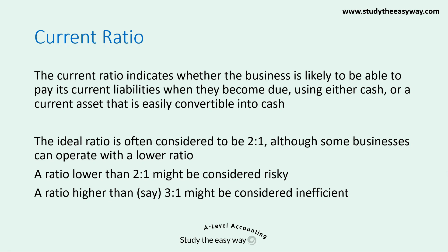An ideal ratio is often considered to be 2 to 1, although some businesses — notably retail businesses — can operate with a lower ratio. A ratio lower than 2 to 1 might be considered risky, because it might indicate that the business is unlikely to pay its current liabilities when they become due. A ratio higher than, for example, 3 to 1 might be considered inefficient, in that the business might have too many current assets and is not making good use of them — for example, keeping money as cash instead of training staff, paying for advertising, or investing in non-current assets.